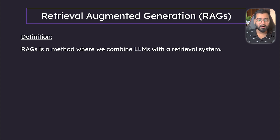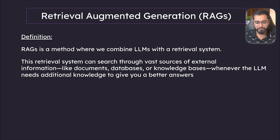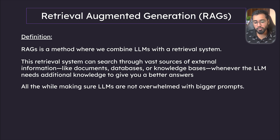Let's look at a much better definition. RAGs is a method where we combine LLMs with a retrieval system. This retrieval system can search through vast sources of external information like documents, databases, and knowledge bases whenever the LLM needs additional knowledge to give you better answers — all the while making sure that the LLM is not overwhelmed with bigger prompts.